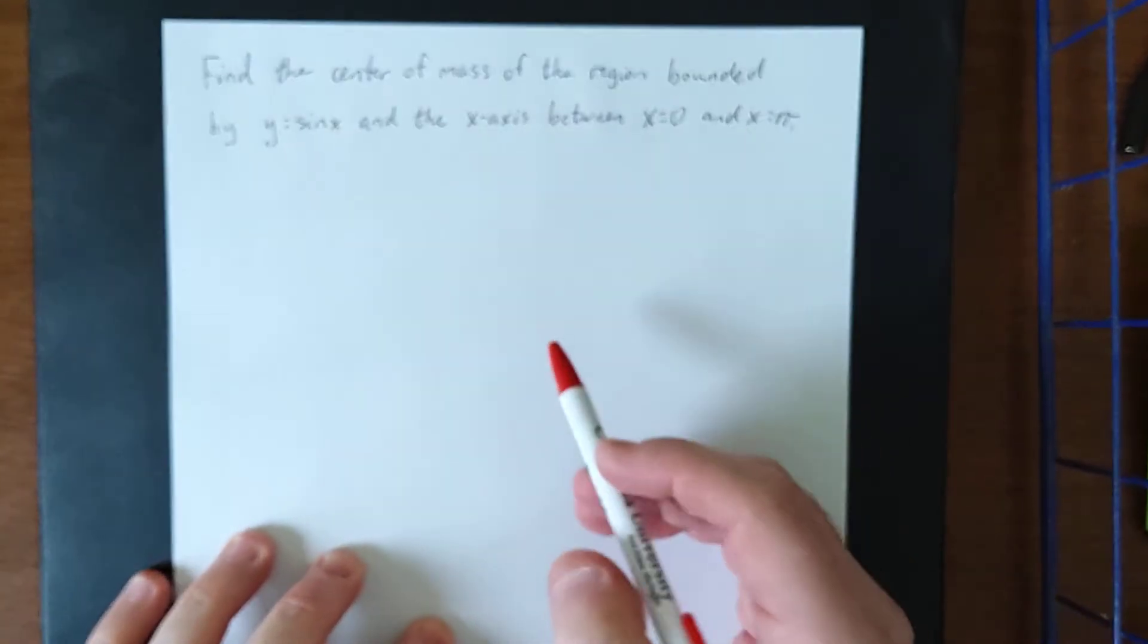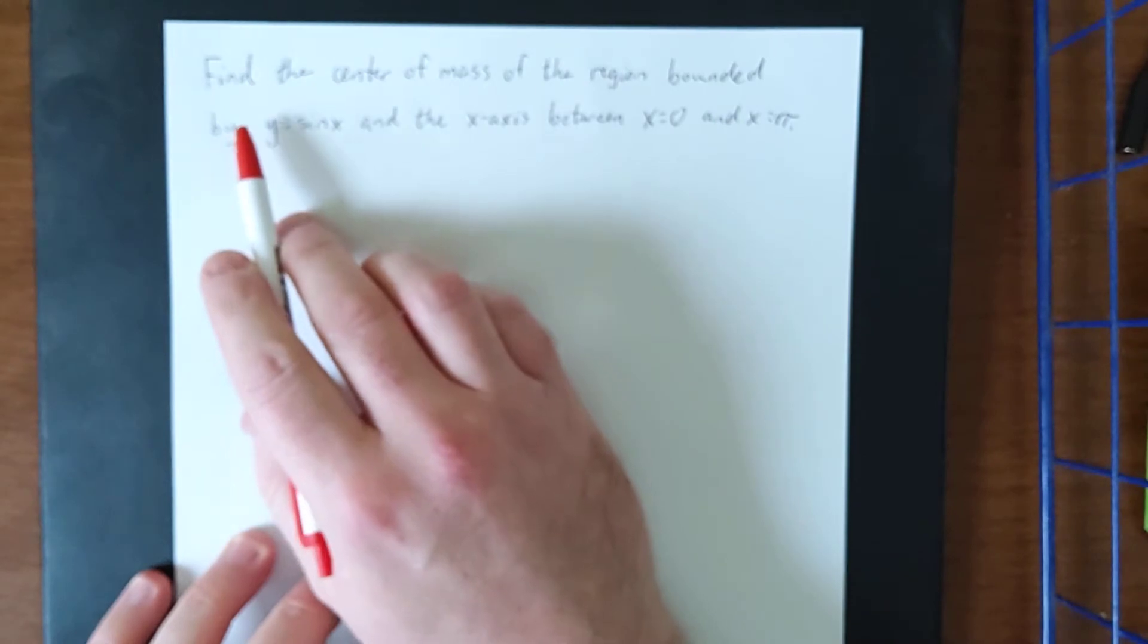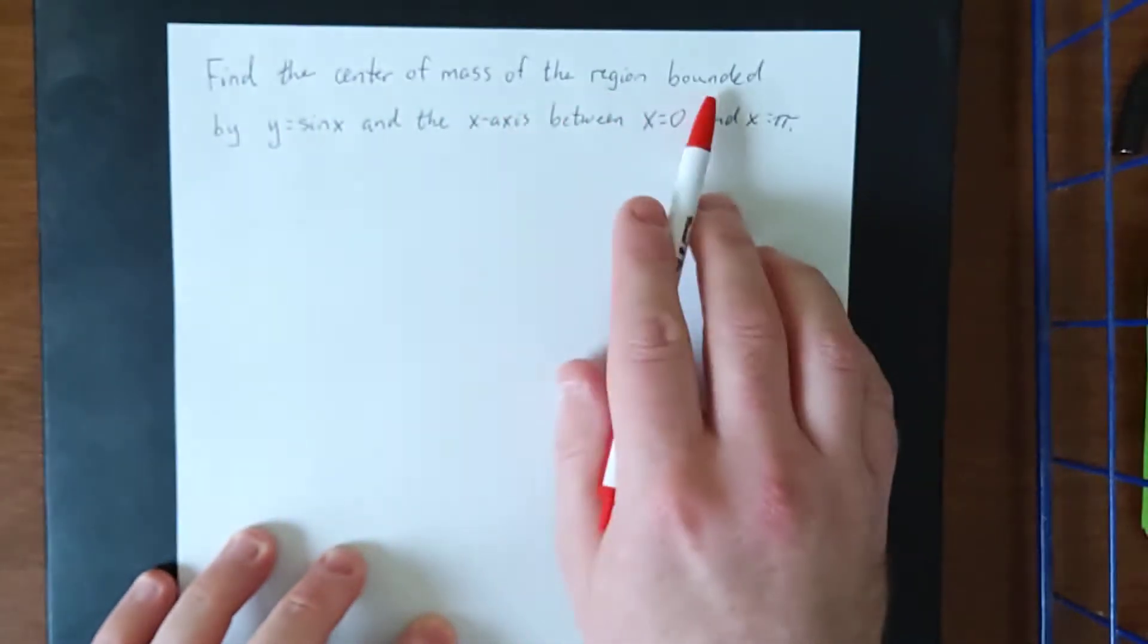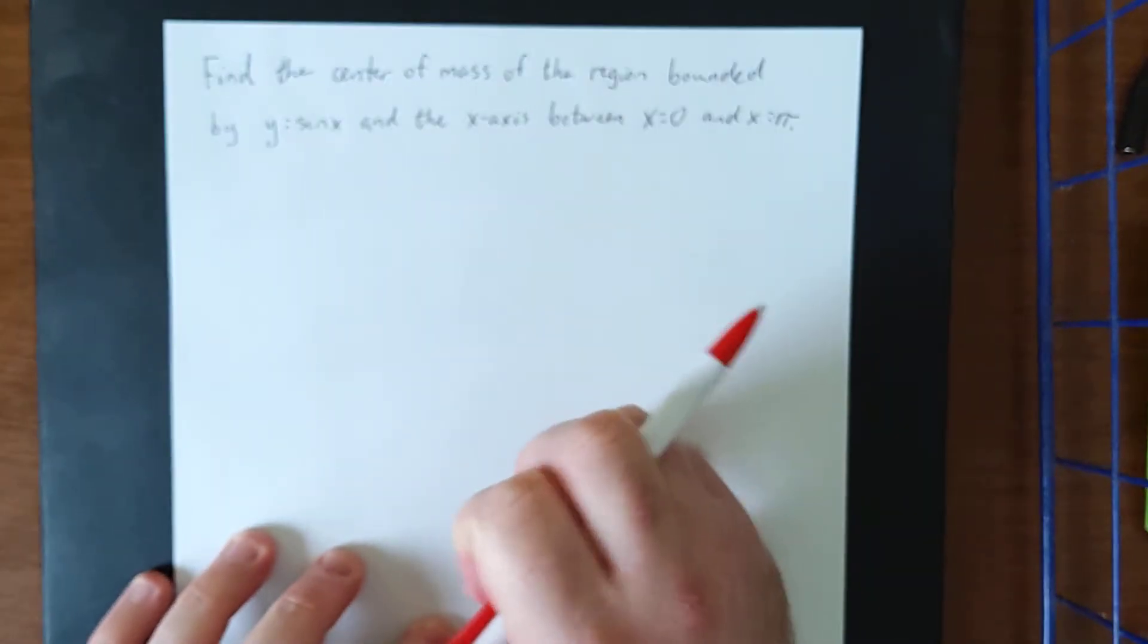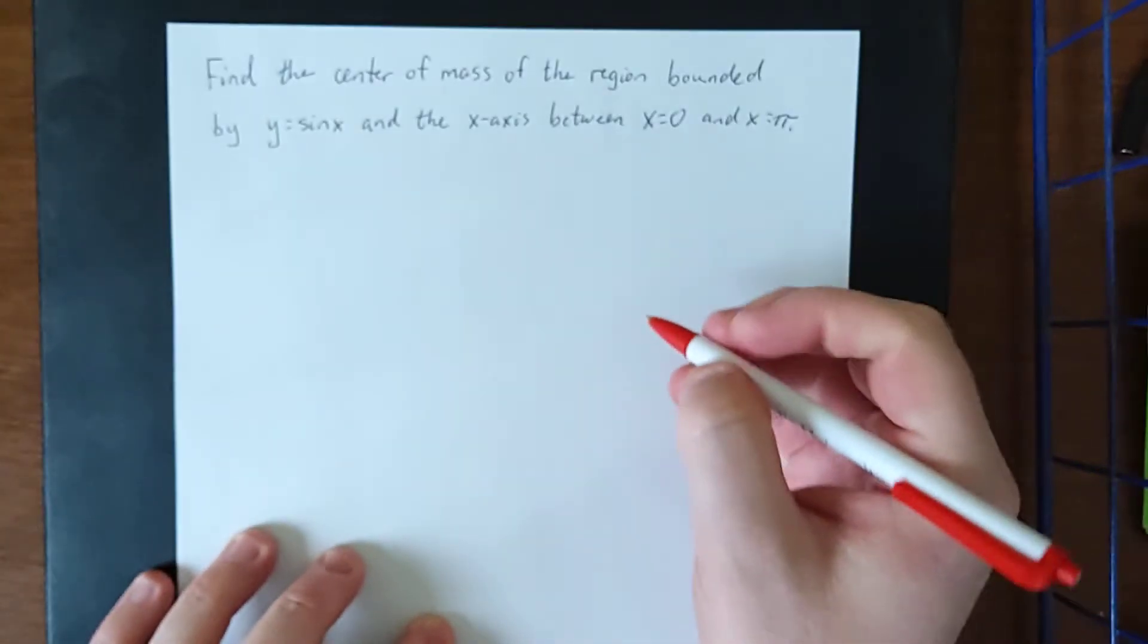All right, let's go ahead and try this one more time. For this example, we're going to be finding the center of mass of the region bounded by y equals the sine of x and the x-axis between x equals 0 and x equals pi.